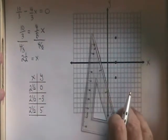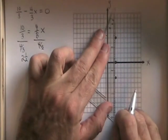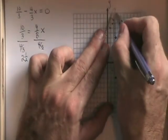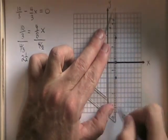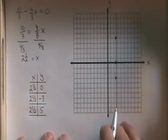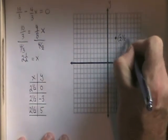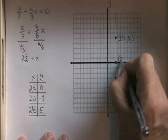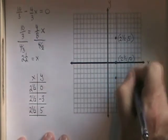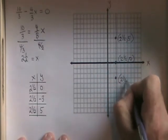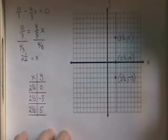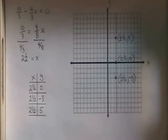All that's left is to draw a straight line through those points, going all the way through the graph, and to label the three points that were in my table. This is how we graph a vertical line.